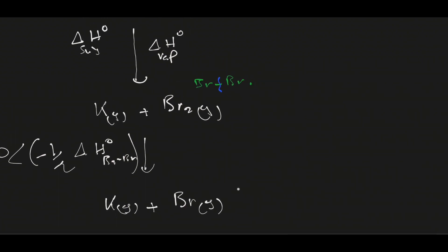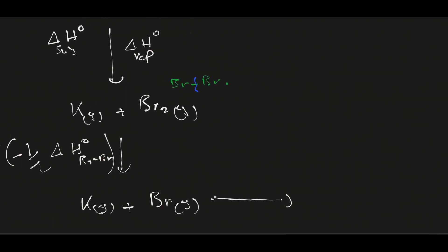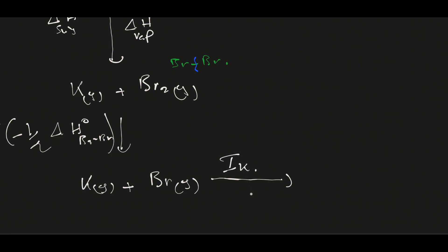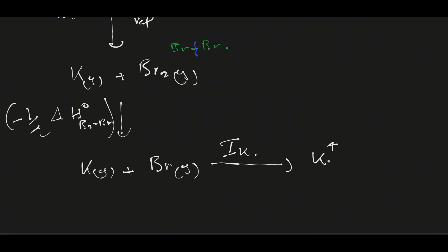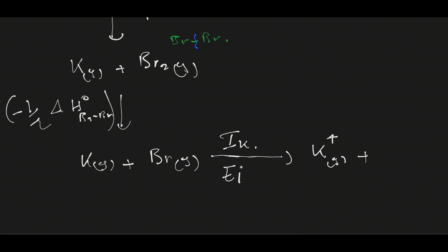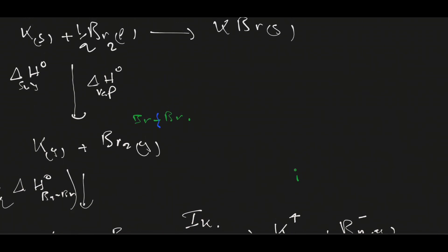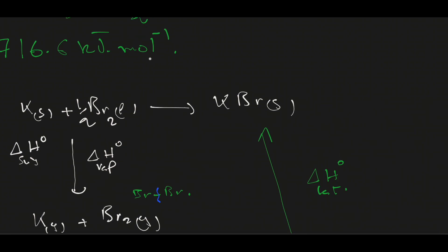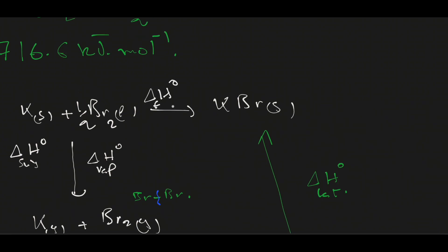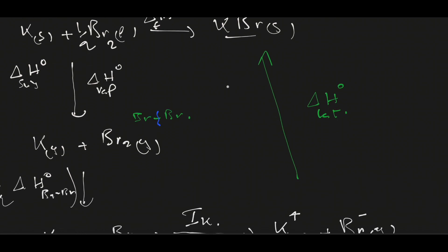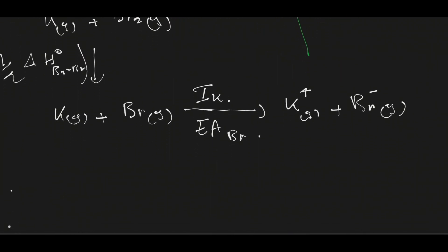Now we can ionize each atom using the ionization energy of potassium to get gaseous ionic K⁺, and we also provide the electron affinity of bromine to get the anionic species Br⁻. Now we can form the solid crystalline KBr using the lattice energy. We can now calculate the standard enthalpy of formation of KBr from this Born-Haber cycle by applying Hess's Law.